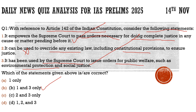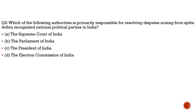I hope you understood Article 142 and got the basic gist of it, along with what was in the news today. Moving to question two: which of the following authorities is primarily responsible for resolving disputes arising from splits within recognized national political parties in India?